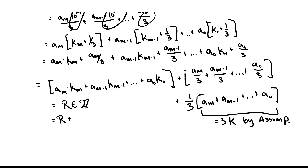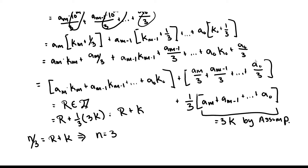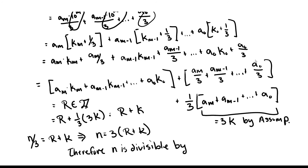So I can rewrite everything as r + one-third × 3k, which equals r + k. Therefore n/3 = r + k, which implies n = 3(r + k). Since r and k are both integers, this implies that n is divisible by 3, since n equals 3 times an integer. Thus we have shown that if the sum of a number's digits is divisible by 3, the original number is divisible by 3.